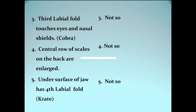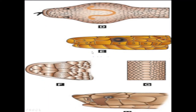Another feature is the labial fold on the under surface of the jaw. These are the scales present on the lips or mouth of the snake. The fourth infralabial fold on the under surface of the mouth — counting from the front — is the largest one. This is a characteristic feature of poisonous snakes.